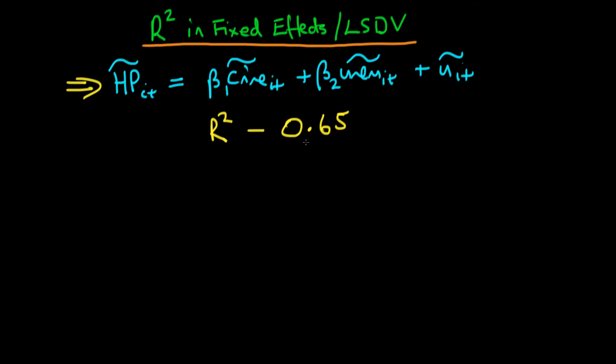Well what does that actually mean, because essentially here there are two different meanings which we could be talking about. We could be talking about the ability to explain deviations in house price away from its time mean or deviations away from its mean across cities. So what do we actually mean by that?